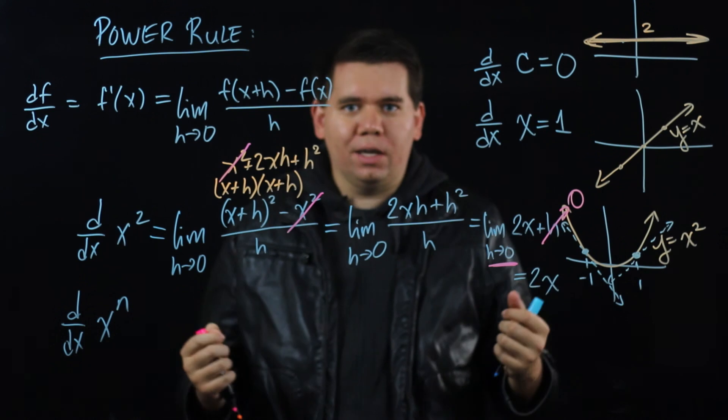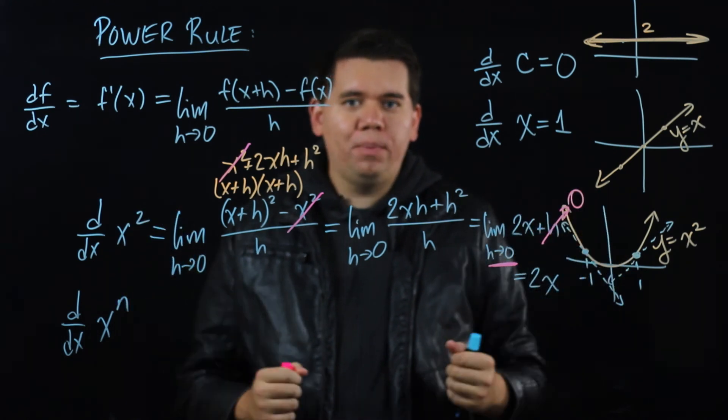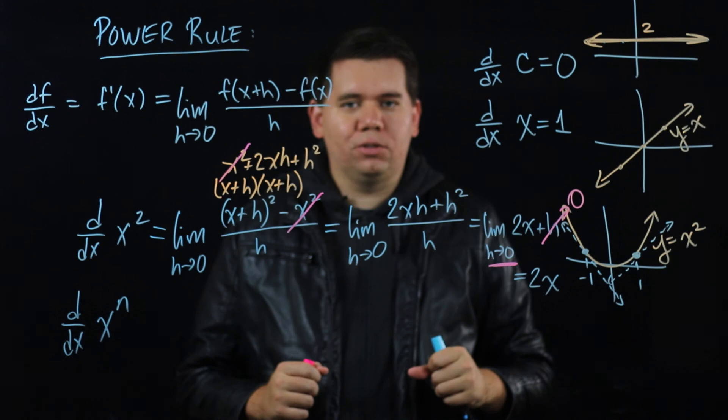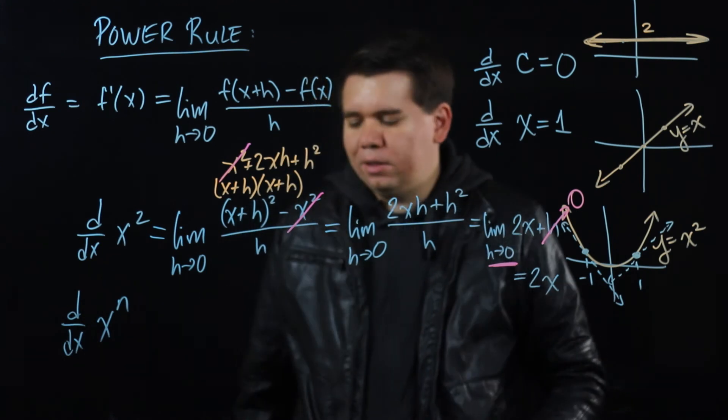But that will give us the rule that we can use whenever we want to. So if you come across x to the 17 in the wild, you'll be able to instantly calculate its derivative. So let's think about how this works.